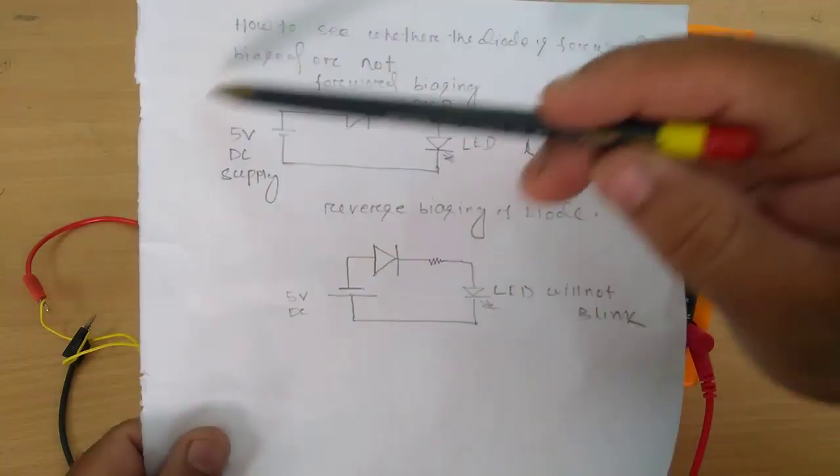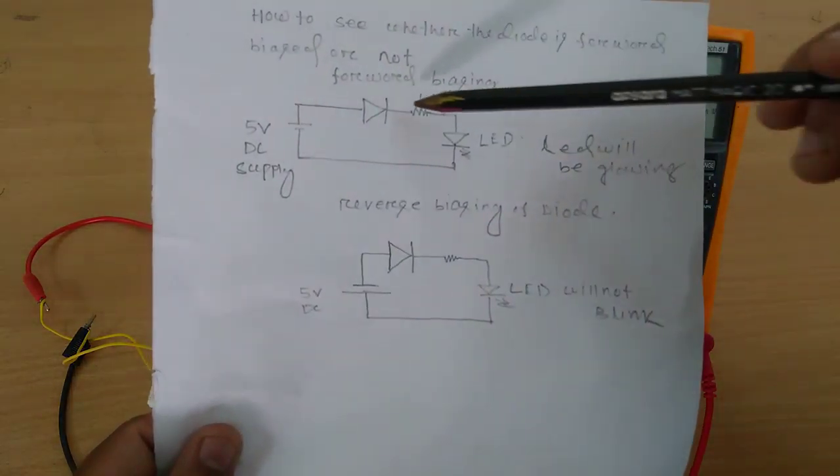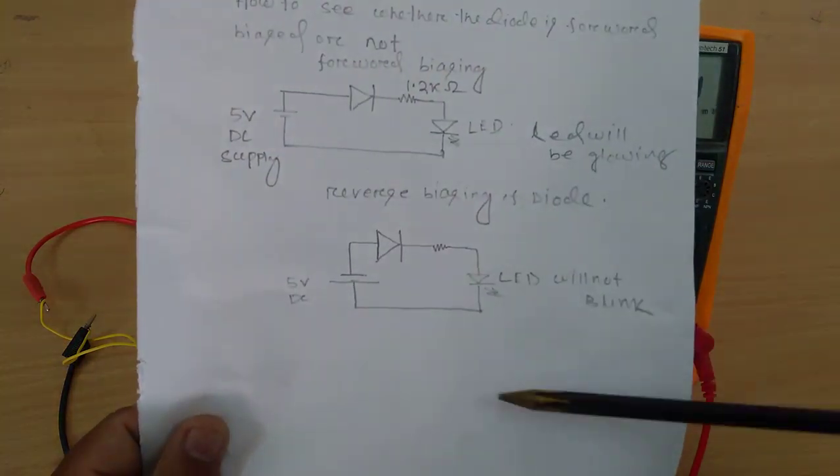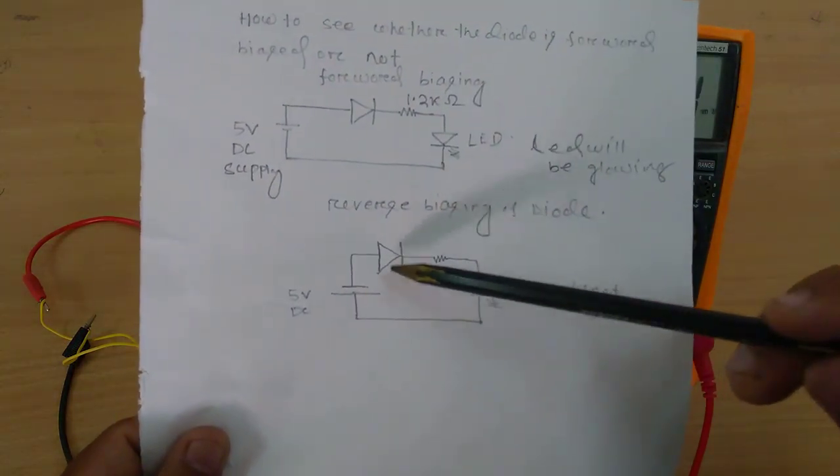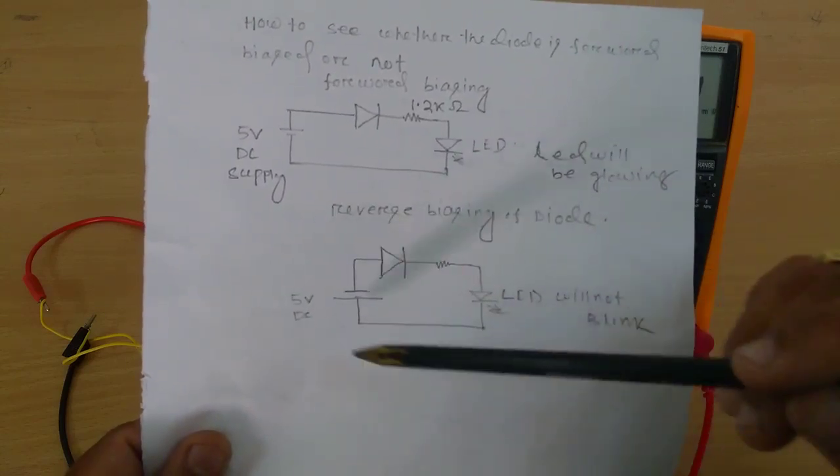So it will allow current to flow through it. It means it will allow this voltage source to supply energy to these loads. But in this condition this will block.